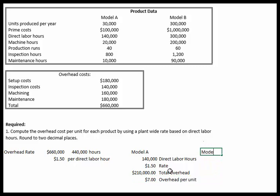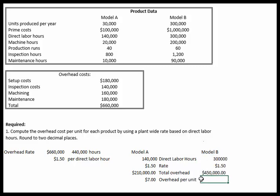Doing the same for Model B: the direct labor hours for Model B are 300,000. The rate stays the same at $1.50, since we're using that general plant-wide rate. Total overhead applied to Model B is $450,000. Spreading that over 300,000 units gives a per-unit overhead cost for Model B of $1.50. So Model A is $7 and Model B is $1.50 using the single plant-wide allocation rate, which answers the entire first requirement.